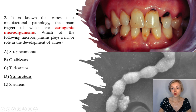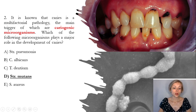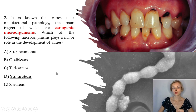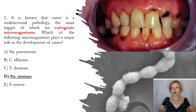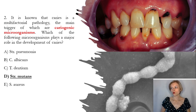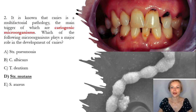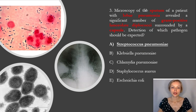In this photo you can see caries. The correct answer is D, Streptococcus mutans, because this is an oral streptococcus — also called viridans streptococcus.